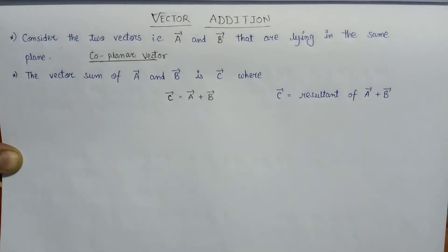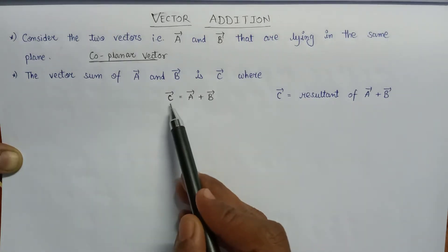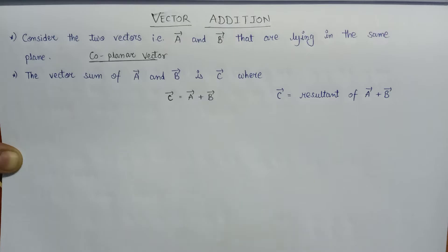Now we can obtain this C vector by the help of two ways. First is by the help of the parallelogram rule, and second by the help of the head to tail rule.